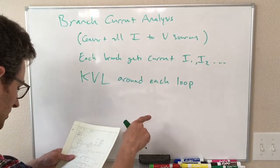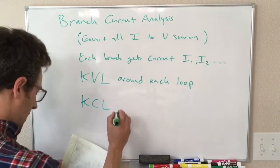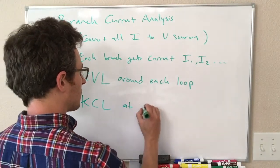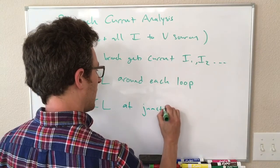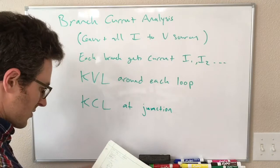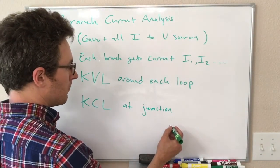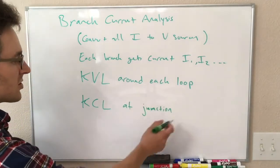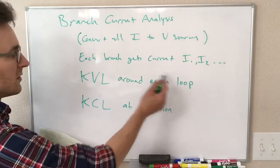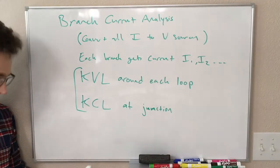So Kirchhoff's voltage law around each loop. And then we do Kirchhoff's current law at a junction. And a lot of times you only need one of these for the size of circuits we're going to do. And this gives us a constraint on the values of I, and those are the same values of I that appear in these equations. And so these are what gives you this system of equations.